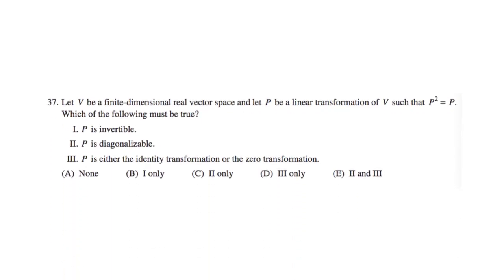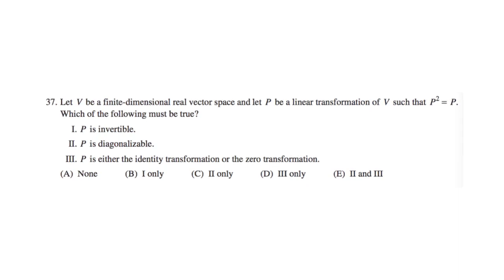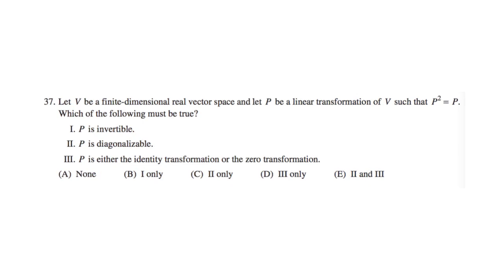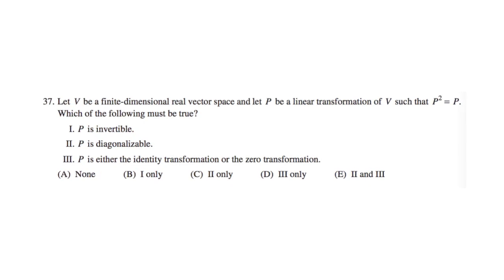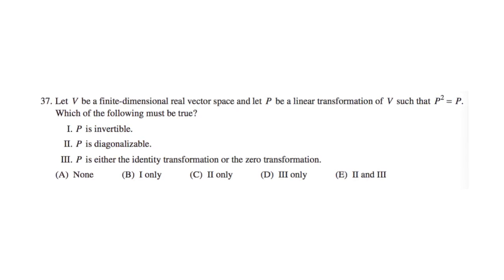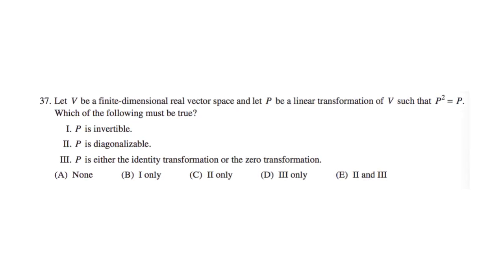Okay, so the problem states that we have a finite dimensional real vector space V, and P is a linear transformation of V, whose square is itself. And we need to determine which of the following must be true: P is invertible, P is diagonalizable, or P is either the identity transformation or the zero transformation.